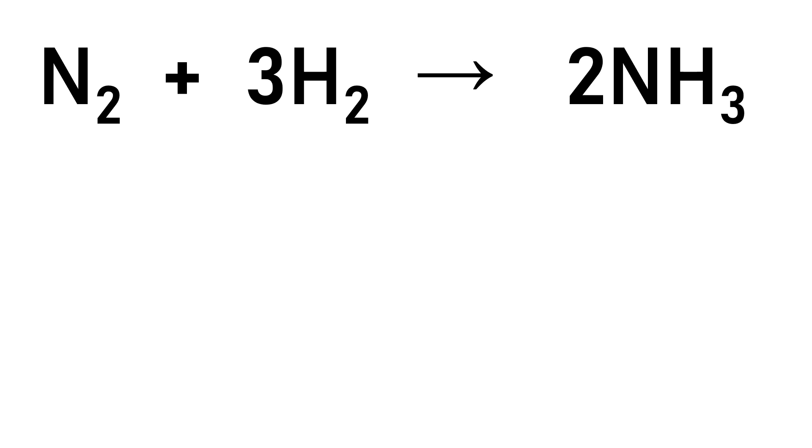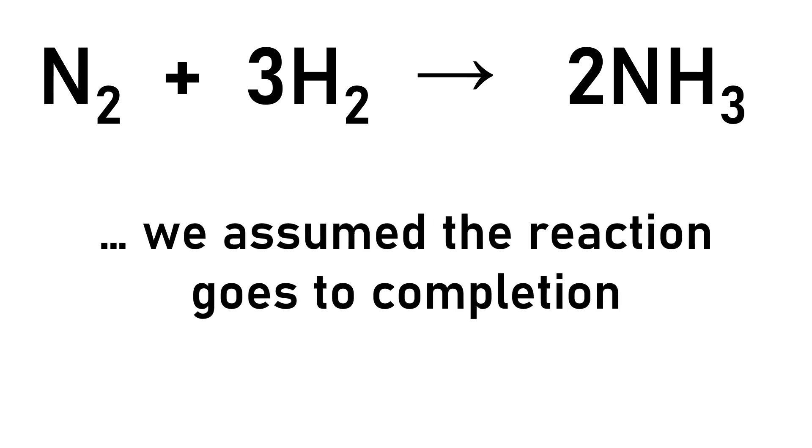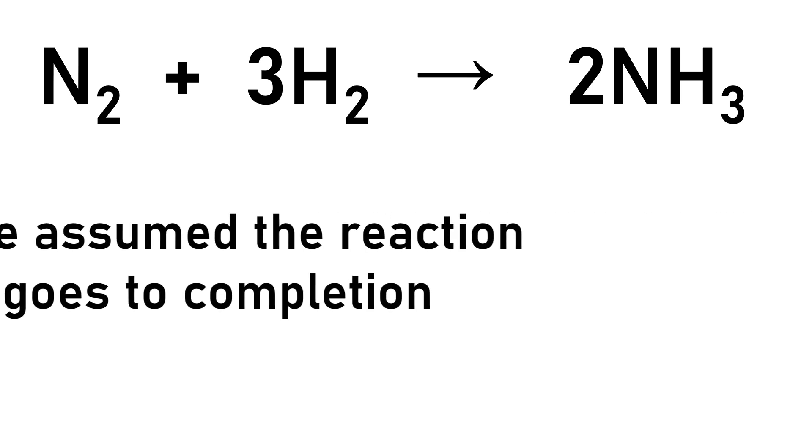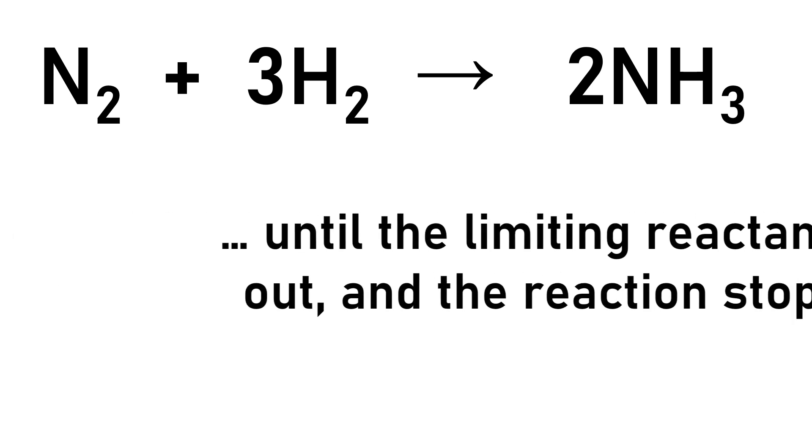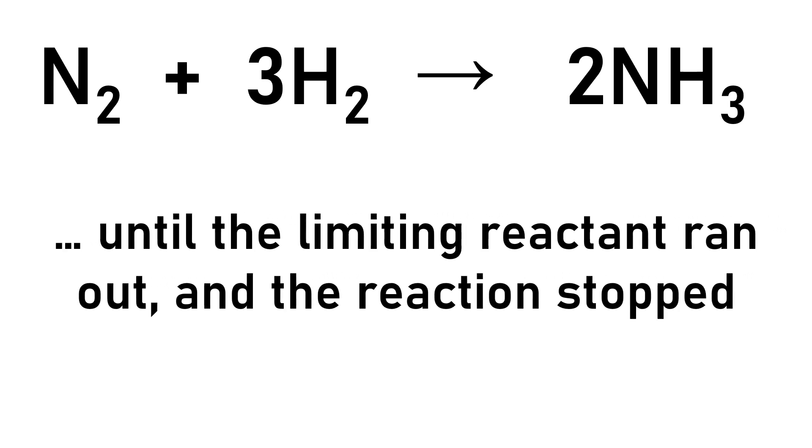When learning stoichiometry for the first time in general chemistry, we assume the reaction goes to completion. That is to say, until the limiting reactant ran out and the reaction stopped.